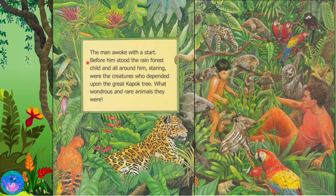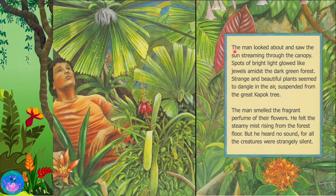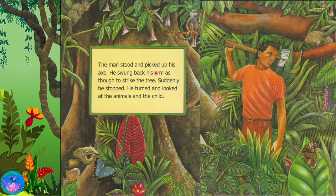The man awoke with a start. Before him stood the rainforest child and all around him, staring, were the creatures who depended upon the great kapok tree. What wondrous and rare animals they were! The man looked about and saw the sun streaming through the canopy. Spots of bright light glowed like jewels amidst the dark green forest. Strange and beautiful plants seemed to dangle in the air suspended from the great kapok tree. The man smelled the fragrant perfumes of the flowers. He felt the steamy mist rising from the forest floor. But he heard no sound, for all the creatures were strangely silent. The man stood and picked up the axe. He swung back his arm as though to strike the tree. Suddenly, he stopped.